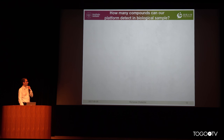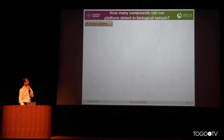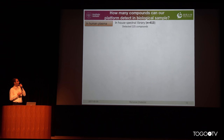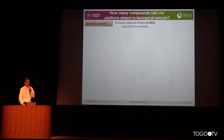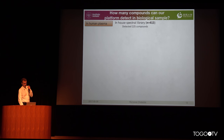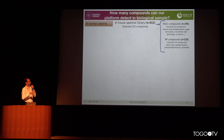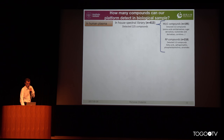There is no straightforward answer — it depends on sample preparation and what is in your sample. However, let me give you some numbers for plasma samples measured in our laboratory. Currently in our in-house spectral library we have 413 compounds, based on what has been reported in the human metabolome and what can be commercially purchased. From these compounds we could detect around 200, roughly half polar and half non-polar.